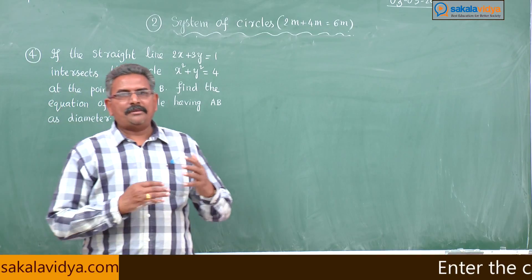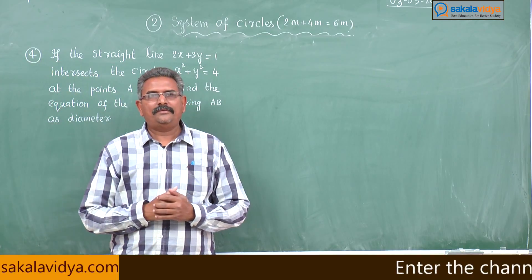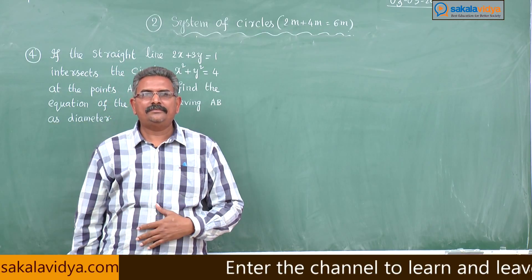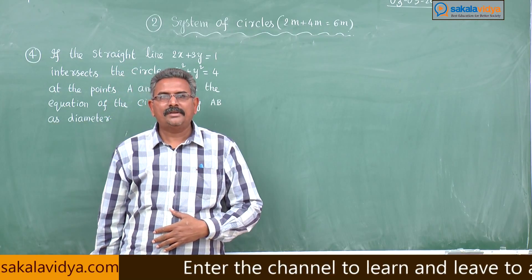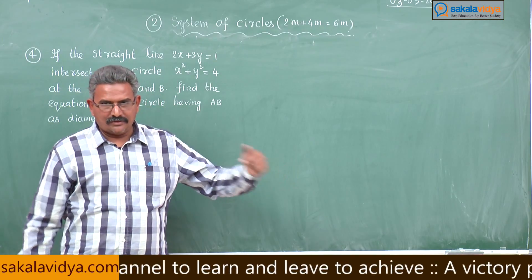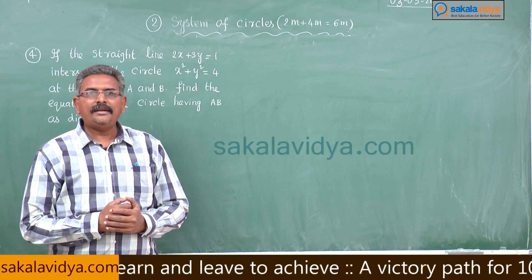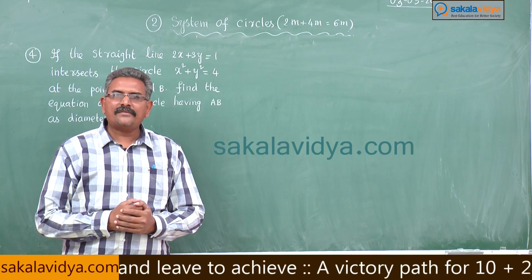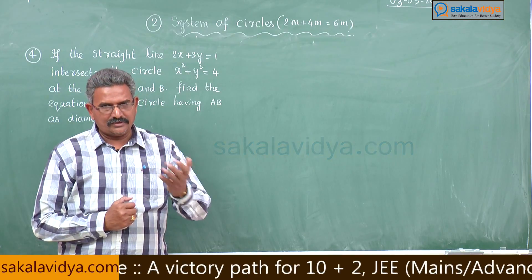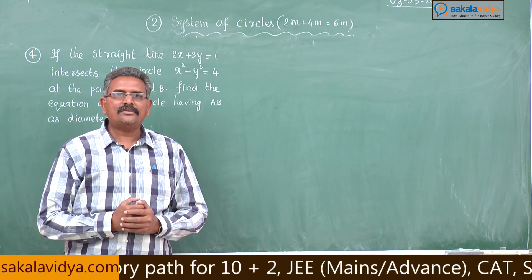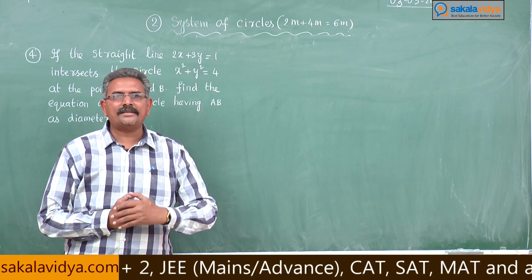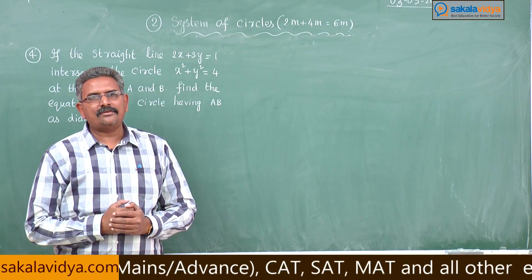In this problem, let the given circle be s = 0 and the given equation of the chord be l = 0. Any equation of the circle passing through the points of intersection of s = 0 and l = 0 can be written as s + λl = 0.